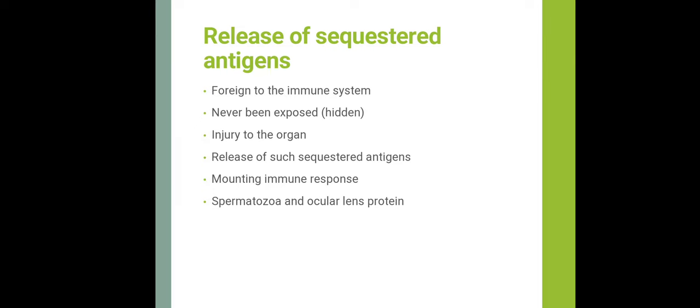Release of sequestered antigens: sequestered or hidden antigens are viewed as foreign by the immune system since they were never exposed to tolerance mechanisms during development. Injury to an organ releases such sequestered antigens, capable of mounting an immune response. For example, sperm or ocular antigens released after trauma or surgery can cause post-vasectomy orchitis and posttraumatic uveitis.